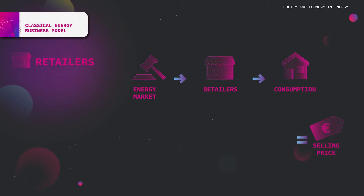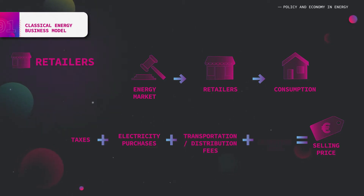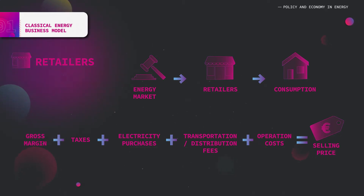The selling price includes, among others, electricity purchases, transportation and distribution fees, national taxes, and the retailer's operating costs such as metering or billing fees. Suppliers differentiate their offers according to the price or origin of electricity.